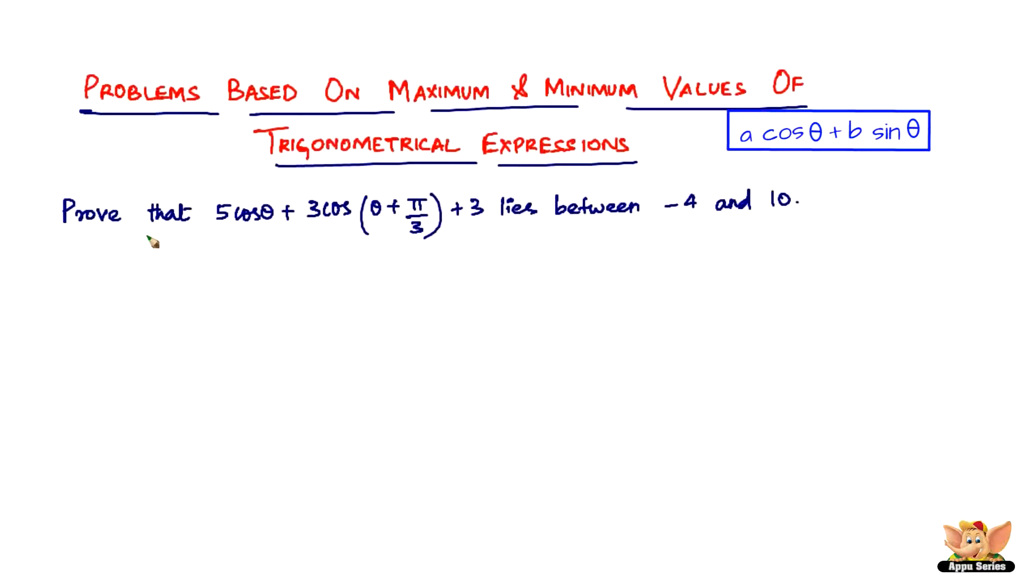Alright, so here we've got another question which reads like this. It says, prove that 5 cos θ plus 3 cos(θ + π/3) plus 3 lies between minus 4 and 10. And what that means is, you just have to prove that this has got a maximum value of 10 and a minimum value of negative 4.